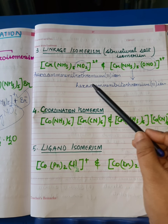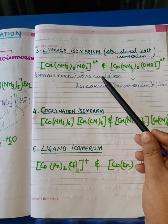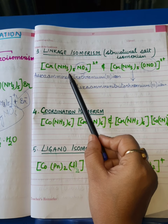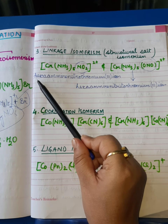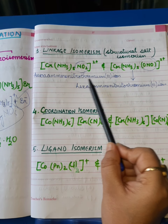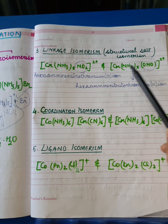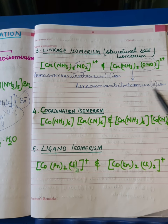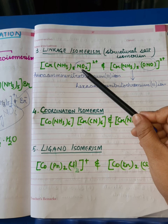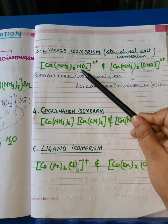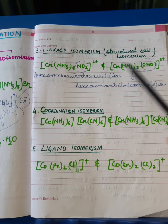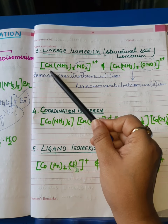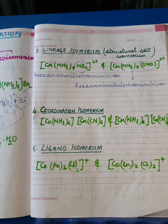We can verify this isomerism via the IUPAC name of the coordination complexes. The IUPAC name of the first complex is hexamine nitrochromium(III) ion, whereas the second is hexamine nitrito-O chromium(III) ion, which clearly shows the difference in the atom via which the NO₂ group attaches itself to the chromium ion.